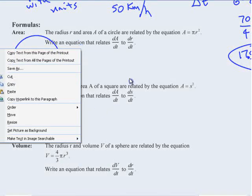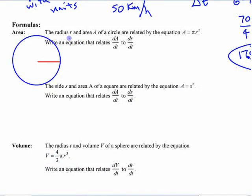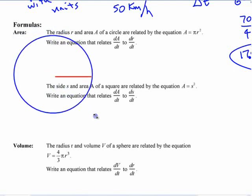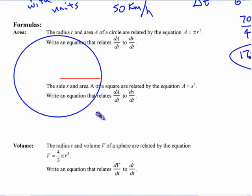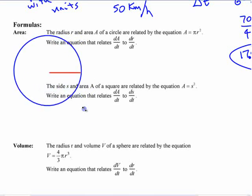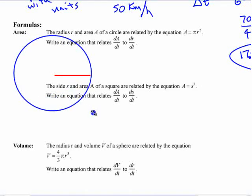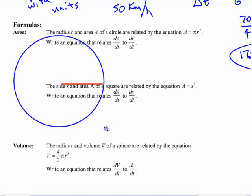If you take this thing now and if you take your circle and you start to increase the size of it, the radius gets bigger, the area gets bigger. Both of them are changing as we go here. Are those rates related to each other?